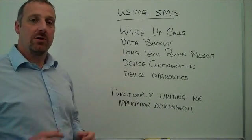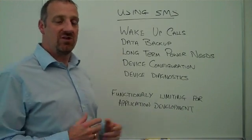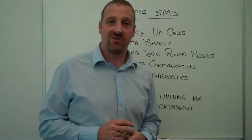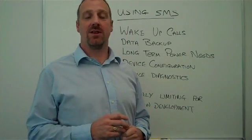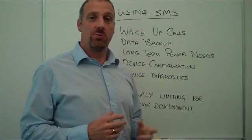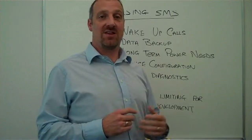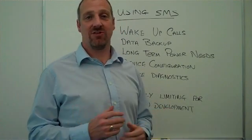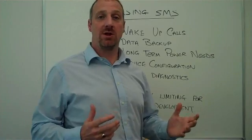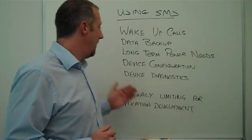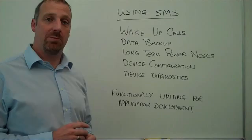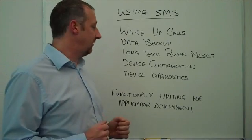Device configuration: we can send devices to the field that do not have configuration settings for data in them when we send them out. Once the device is deployed in the field, we can initially send an SMS containing details such as the APN name, username and password, IP name and address of the server, and it will be configured by that SMS — a very secure way of deploying devices into the field.